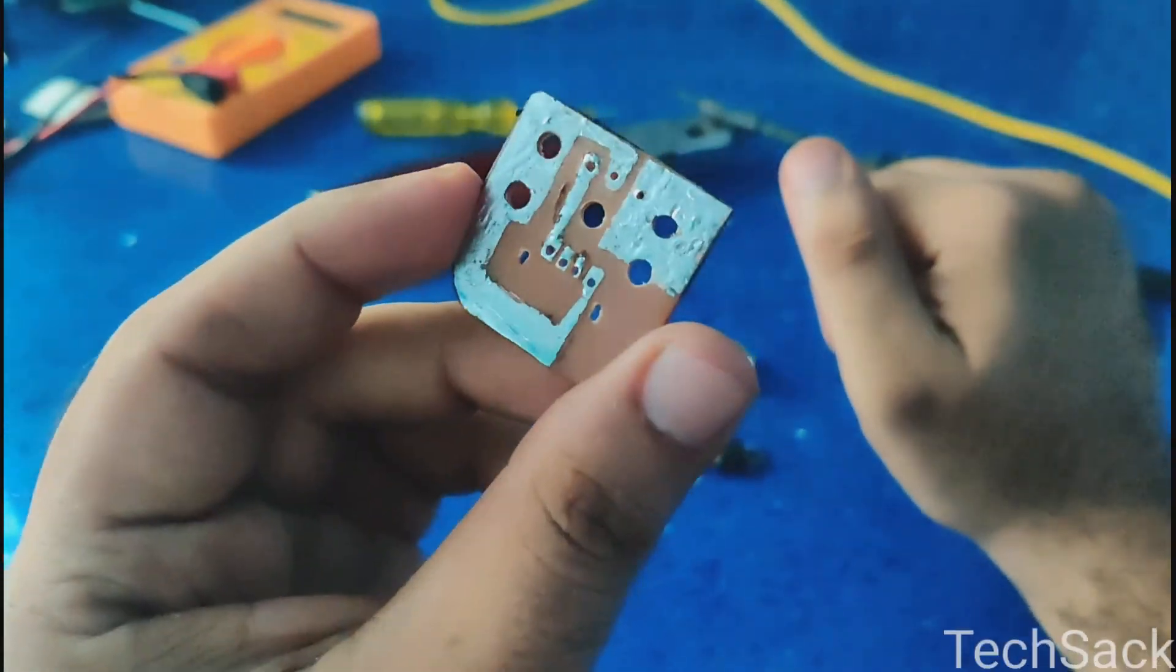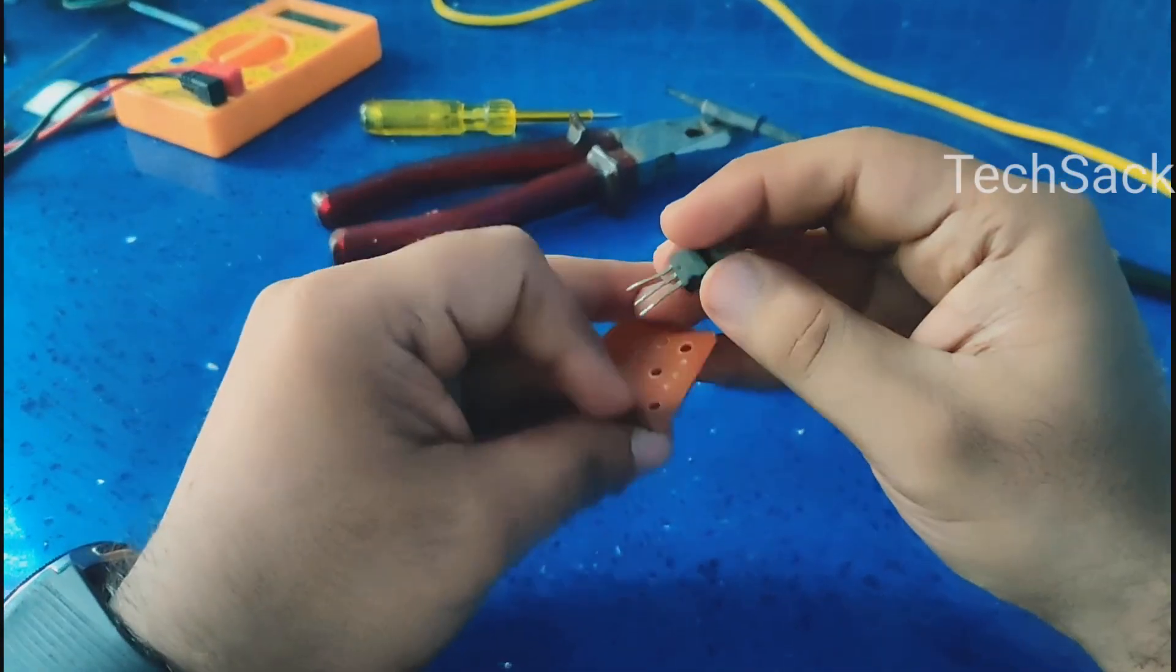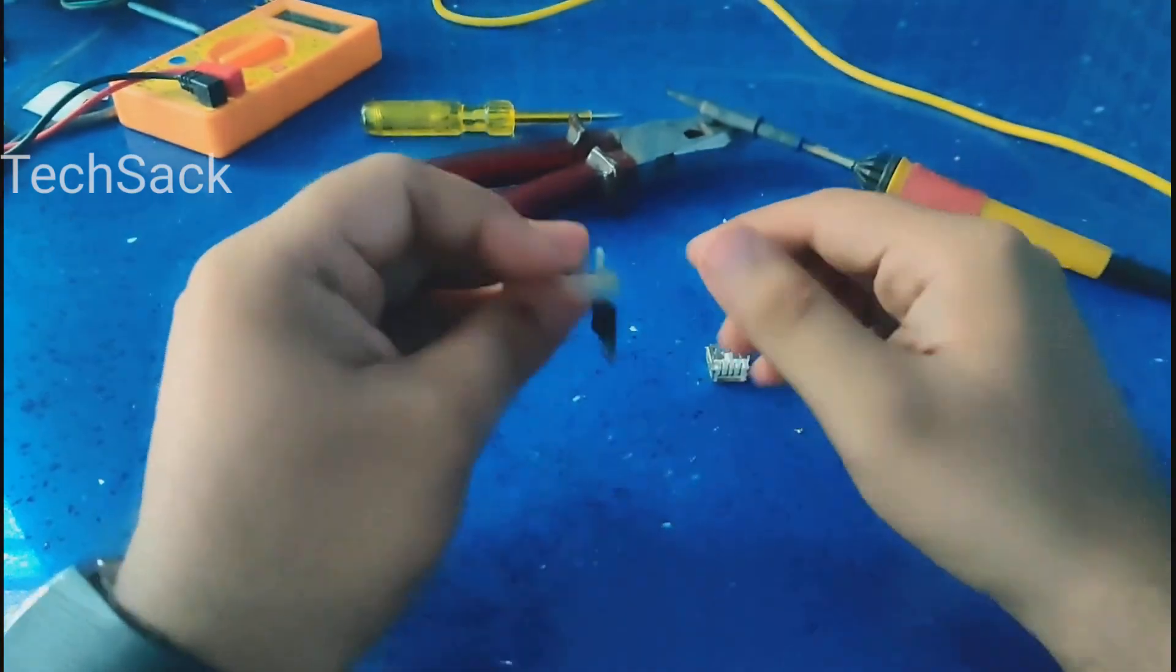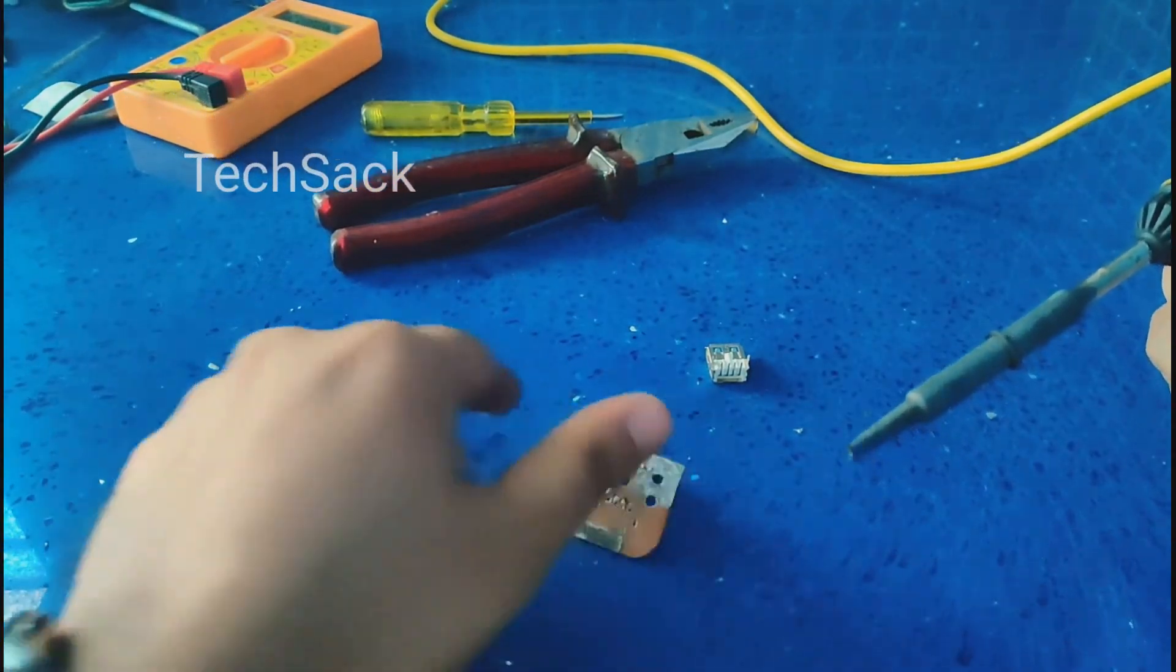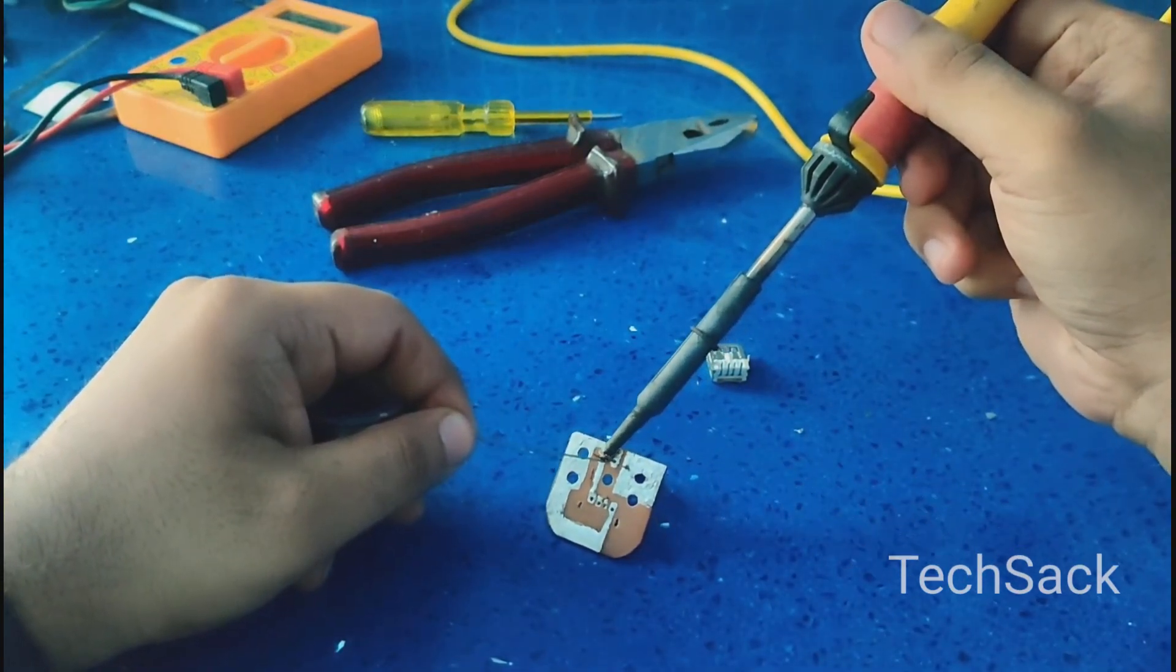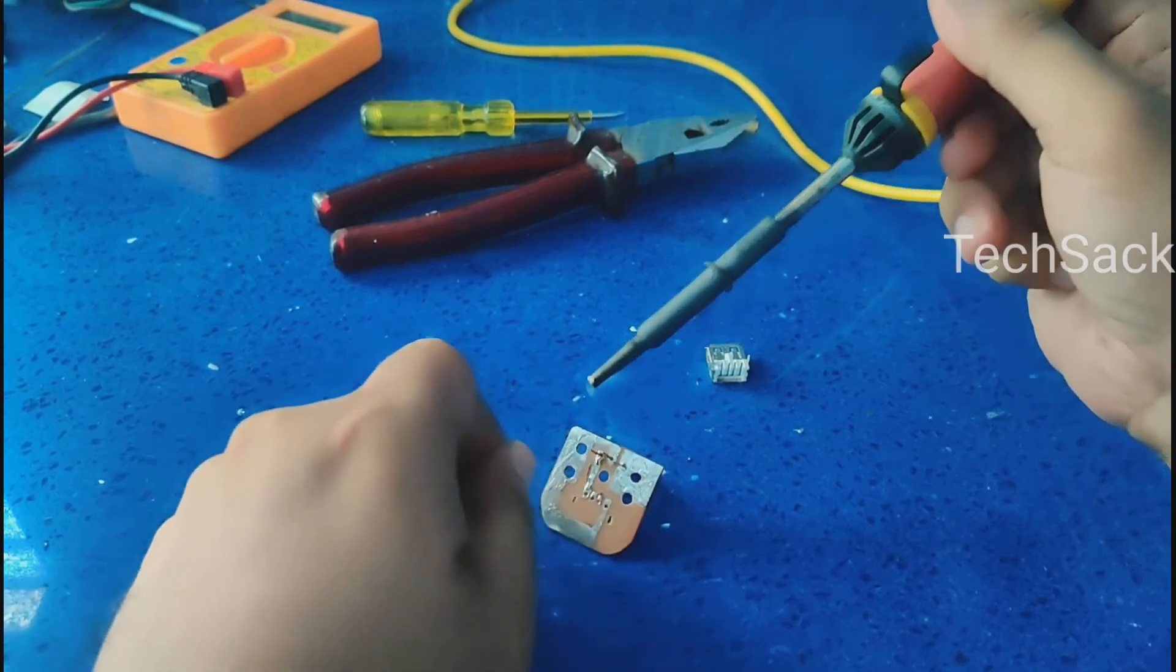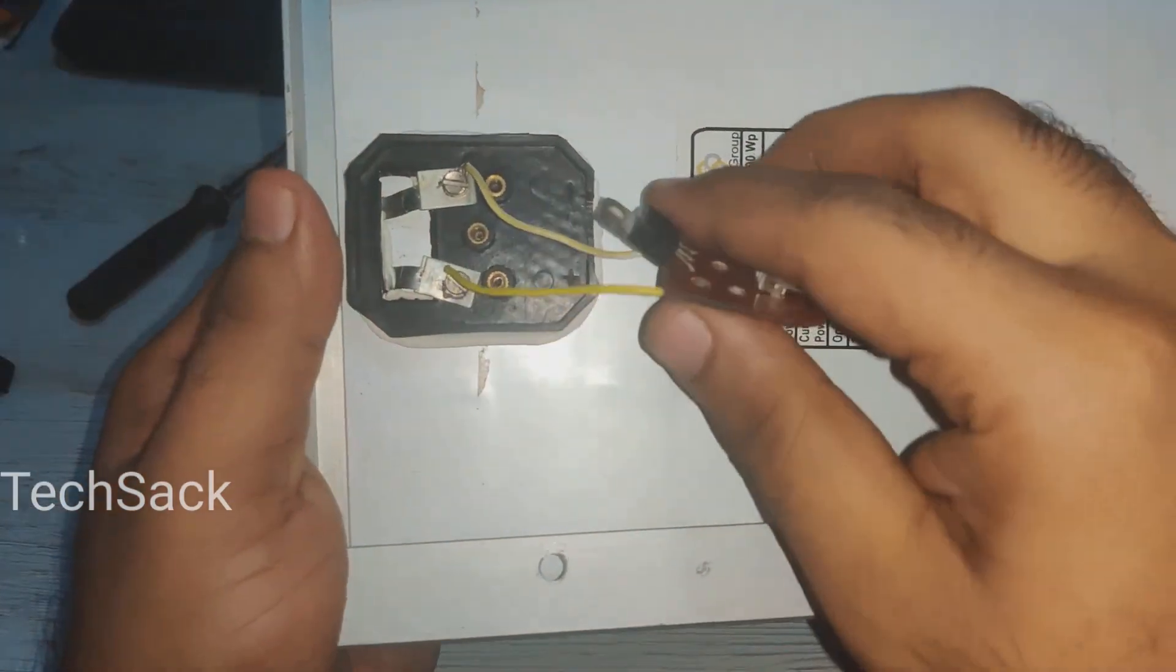Now that I have finished tinning up the PCB, I will start inserting the components into the PCB. Now I am going to solder them to the PCB. Now that I have finished soldering the components, my circuit is ready.